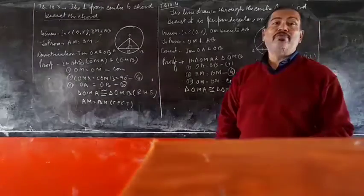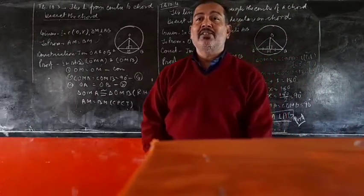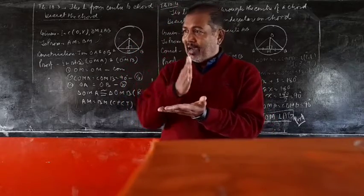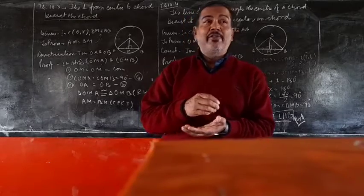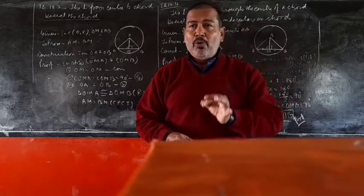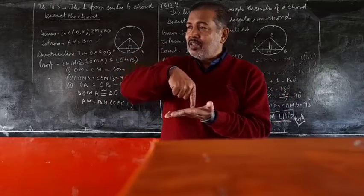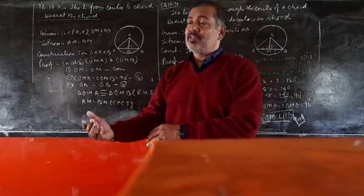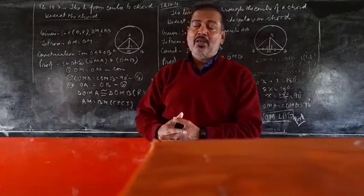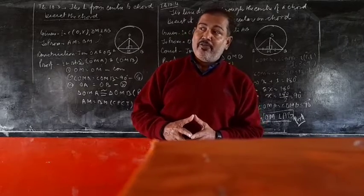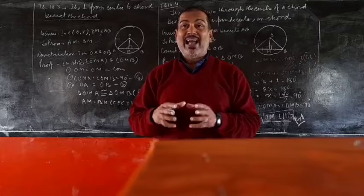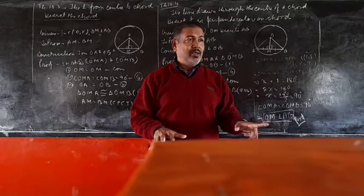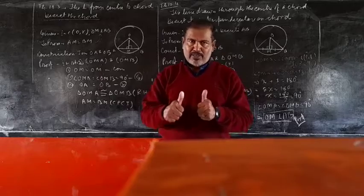So we have gone through two very important theorems: the perpendicular drawn from the center to a chord bisects it, and the converse — a line joining the center to the midpoint of a chord is perpendicular to it. These two theorems are very important for this exercise and for later exercises on circles. Please practice this theorem at least five times, write it by yourself five times — tomorrow I'll check in your math copy. After that we will take the exercise. God bless you, my dear students.